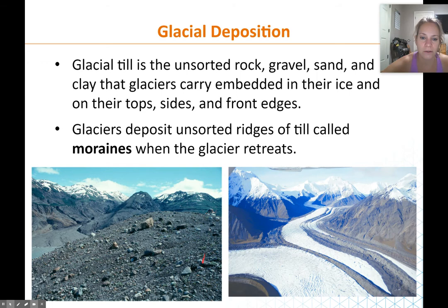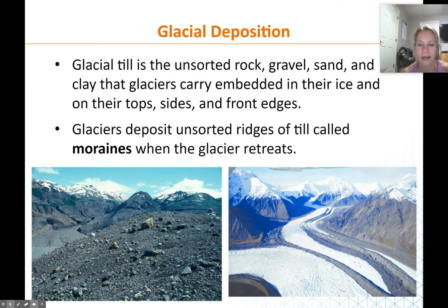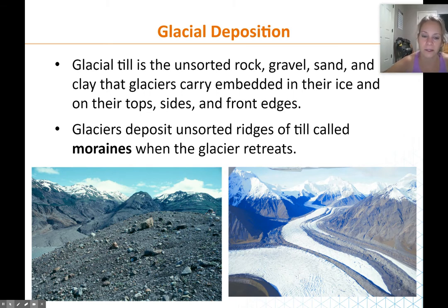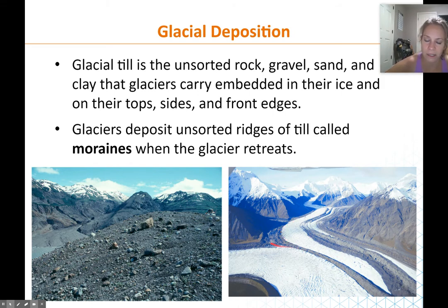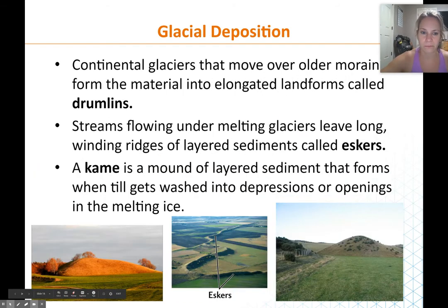As far as deposition goes, we can tell where glaciers have been by what they deposit. This deposit is called a moraine, and the material is called glacial till — all the rock and debris brought down by the glacier. When the glacier stops moving downhill and starts to retreat, the ice melts and leaves all that material behind. Several glaciers merging create lateral moraines — material deposited along the sides — and then a larger moraine may form at the bottom.